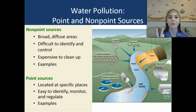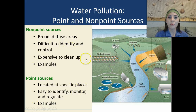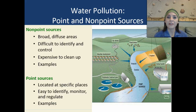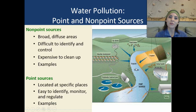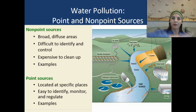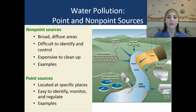There are two types of water pollution: point and non-point sources. Non-point sources are very broad and diffuse areas — they're difficult to identify and control, and they're very expensive to clean up. Some examples of non-point sources would be cropland, because we don't know exactly where all of it's coming from. Tons of chemicals are coming off of cropland, getting deposited into rivers, lakes, streams, and eventually winding up in the oceans.